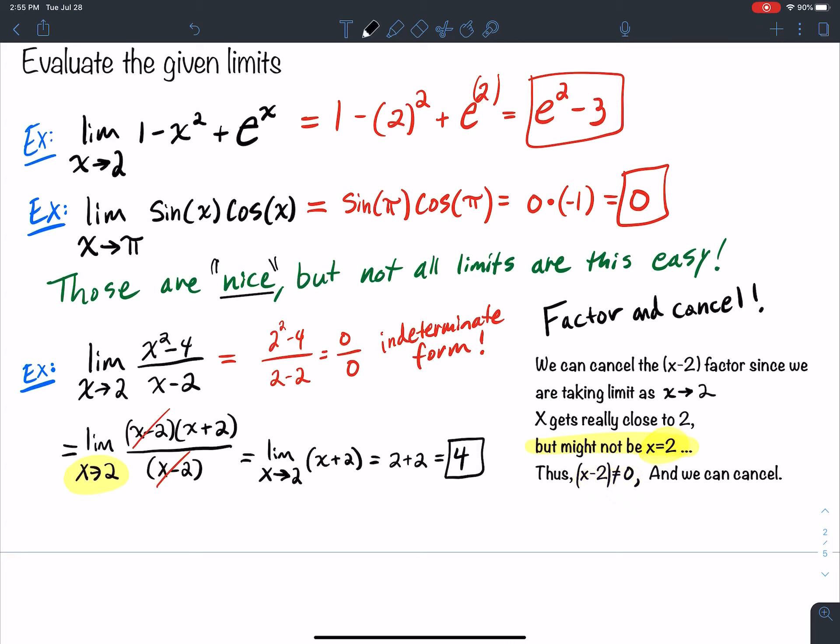So when you get a 0 over 0, and you see a limit as x goes to 2, you might be thinking, okay, is there an x minus 2 factor in there that I can cancel? Because if I plug a 2 in, that gets me a 0 in that factor. That's the idea there. Kind of gives you an idea, a way to cheat on knowing what factors might cancel.